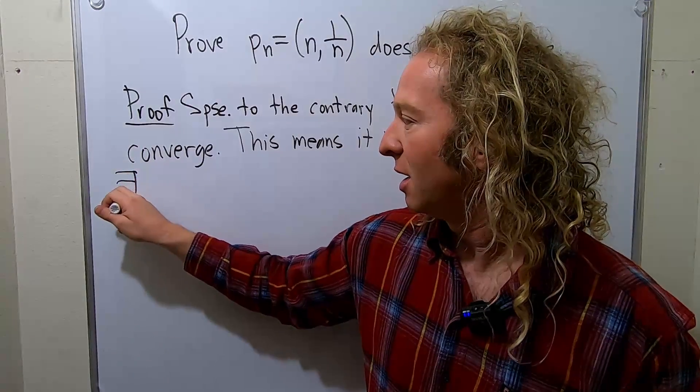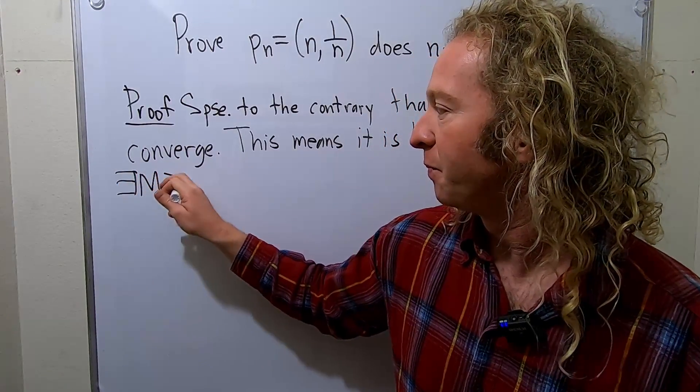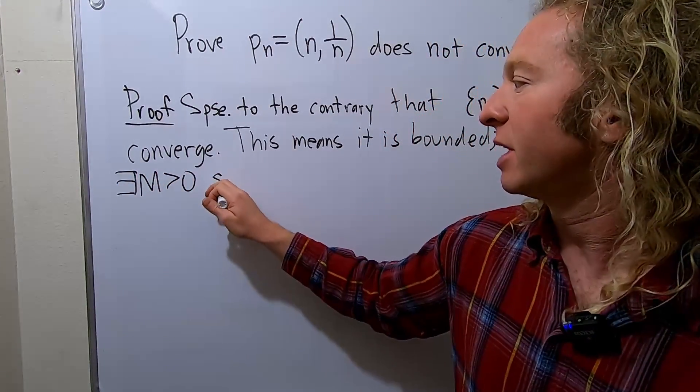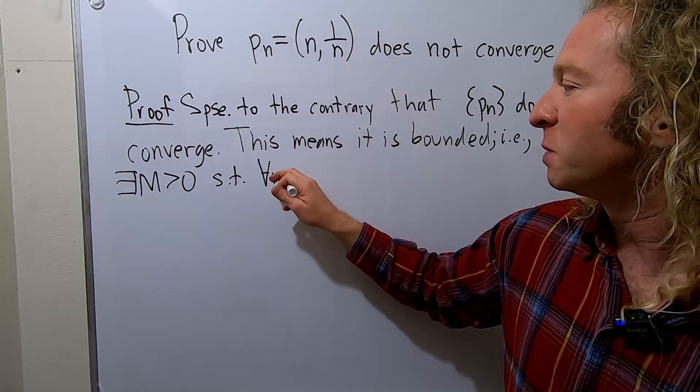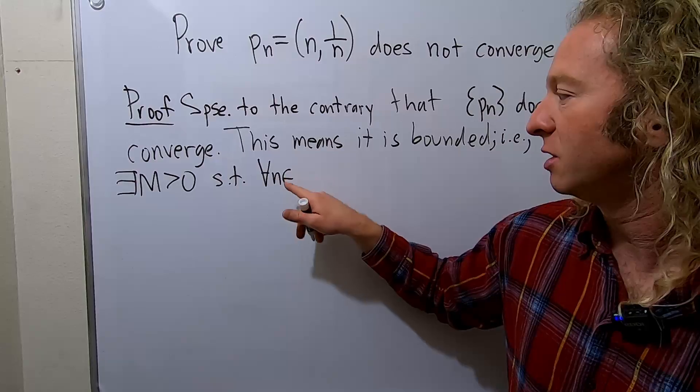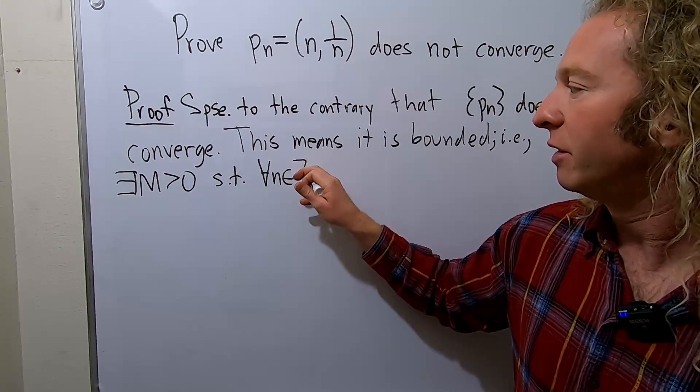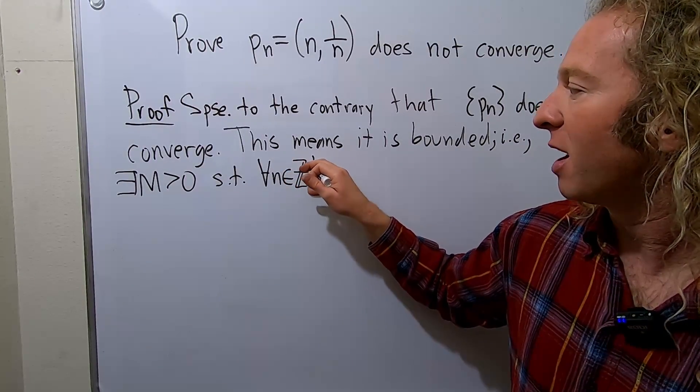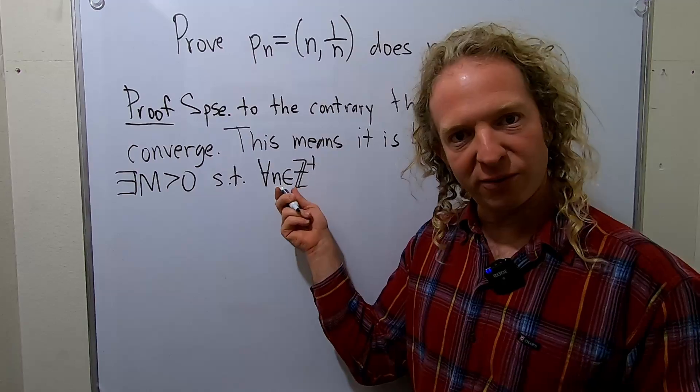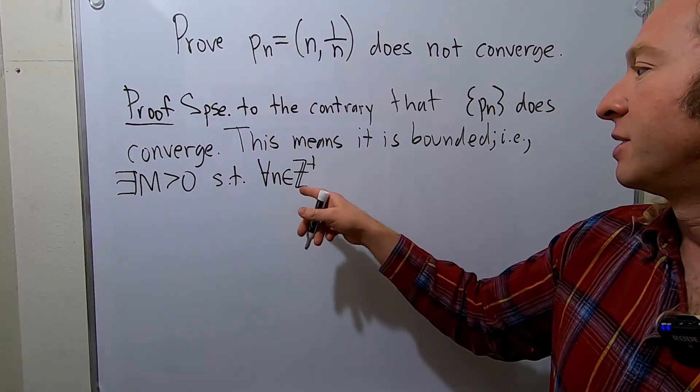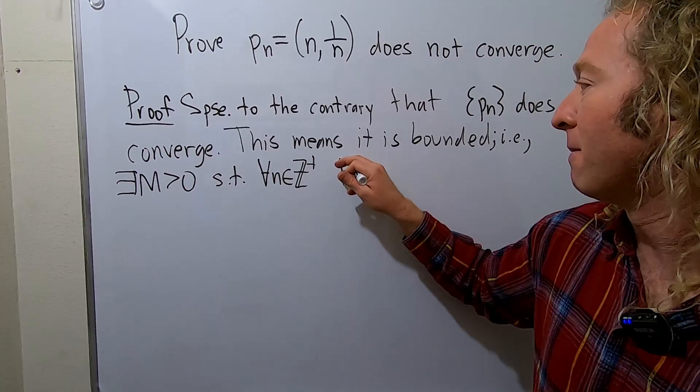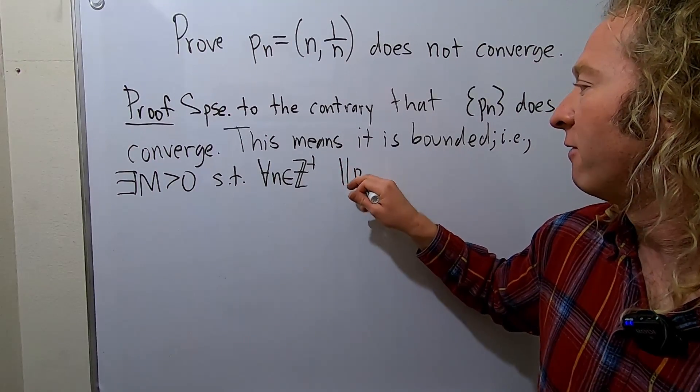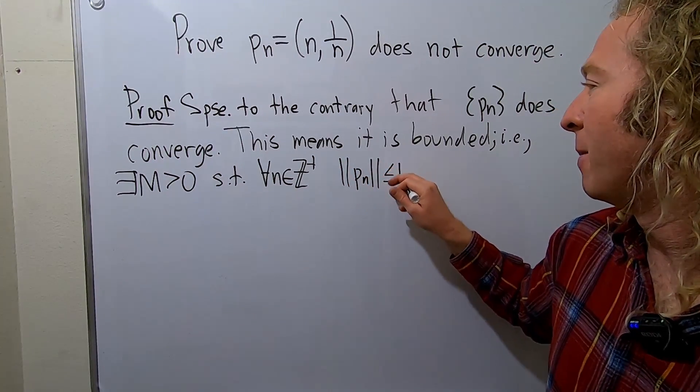There exists a positive number m. That means there exists such that for all integers n for which the sequence is defined, we'll assume it's positive integers. So integers, this means belongs to the set of positive integers. This is like one, two, three, four, five. Such that the absolute value, or the magnitude rather in this case, of p sub n is less than or equal to m.